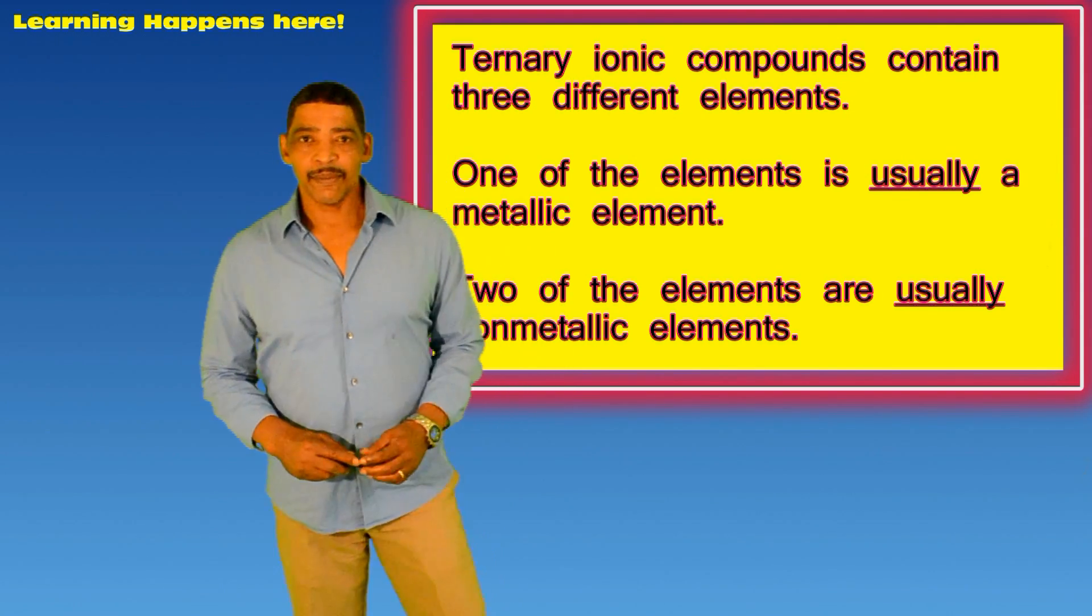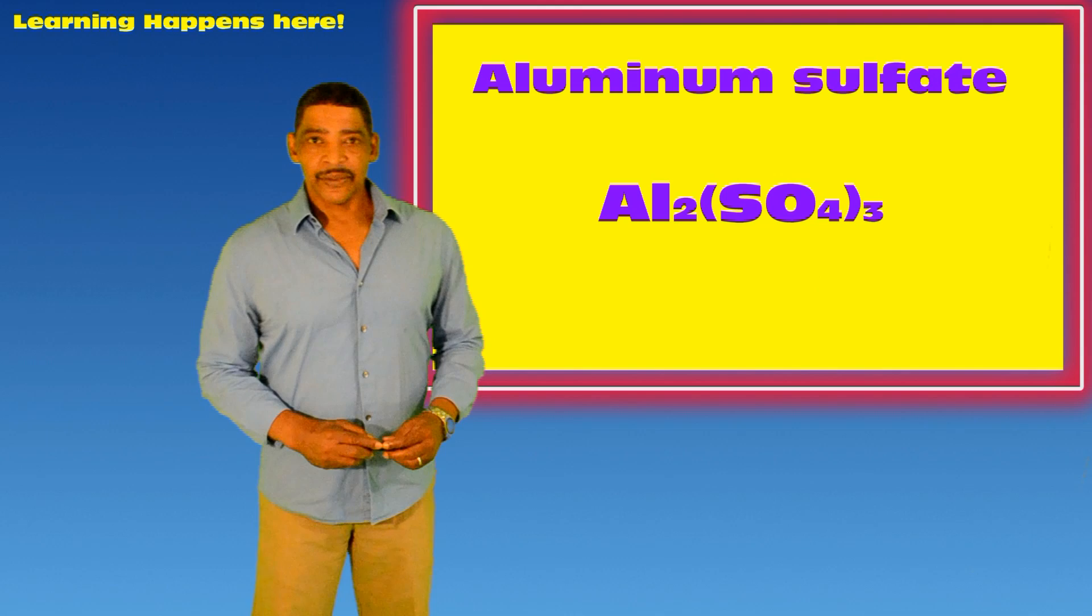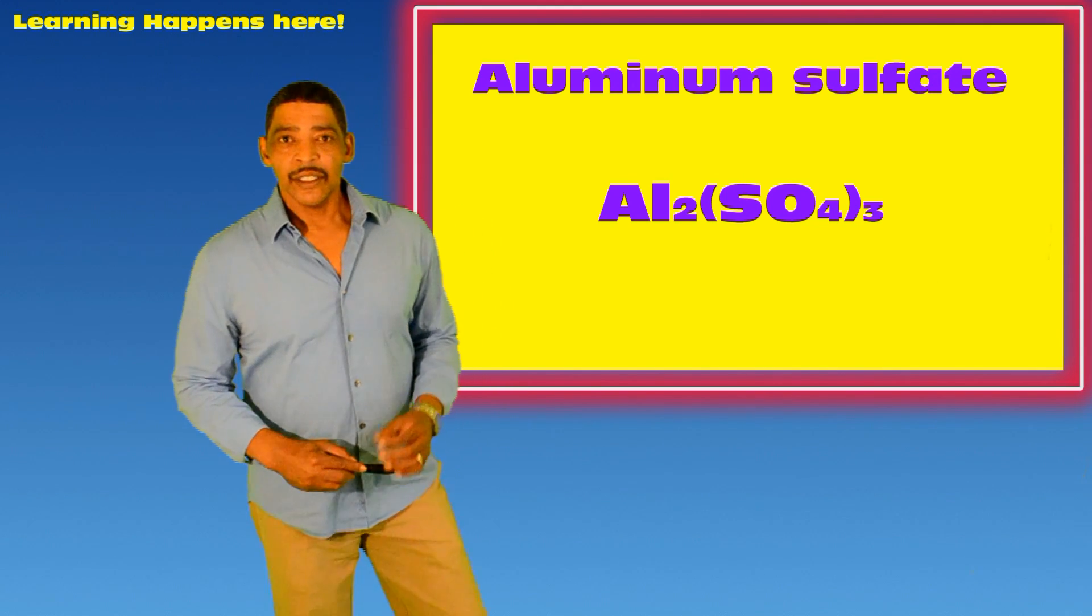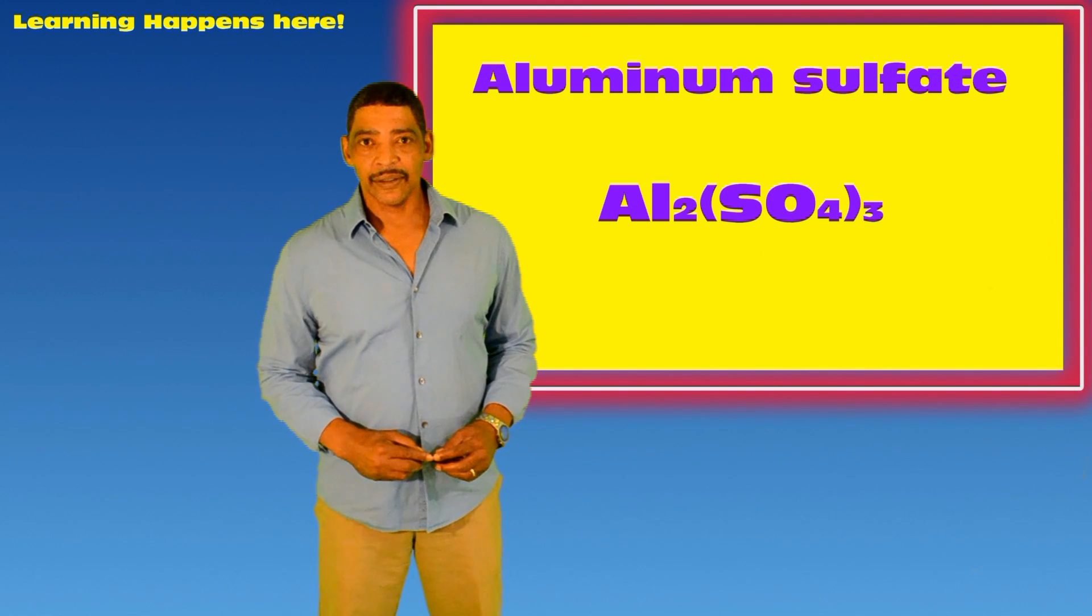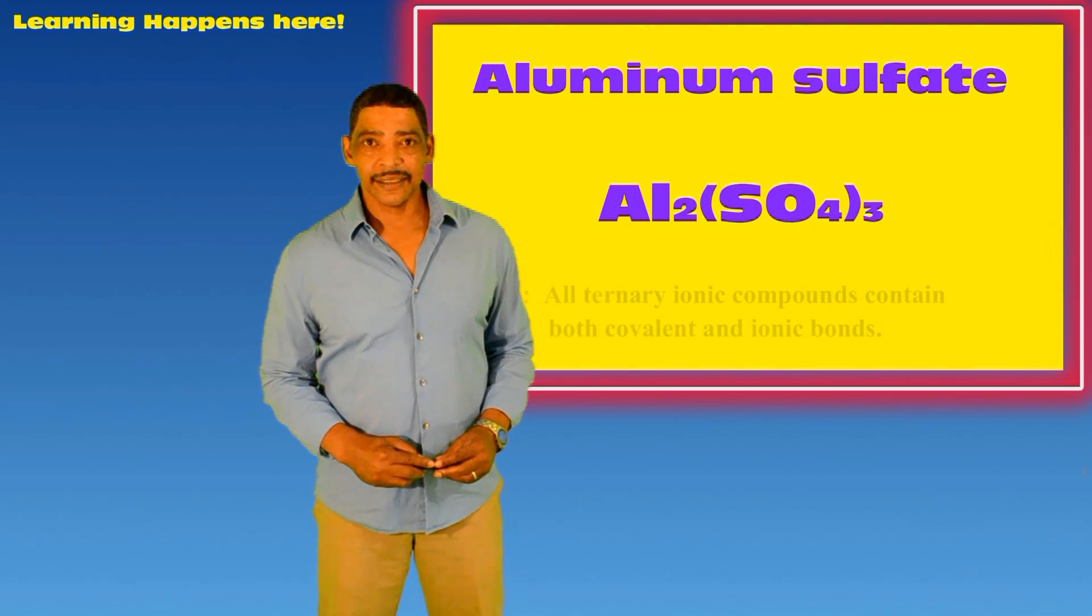One such compound is aluminum sulfate. The compound aluminum sulfate contains two aluminum cations and three sulfate polyatomic anions.